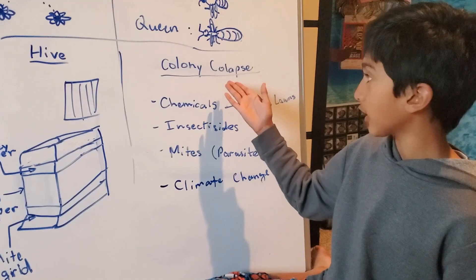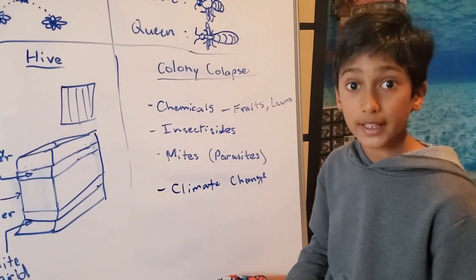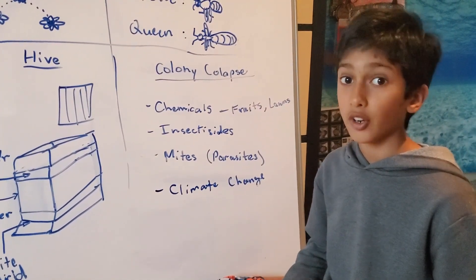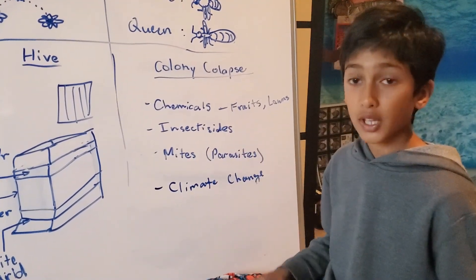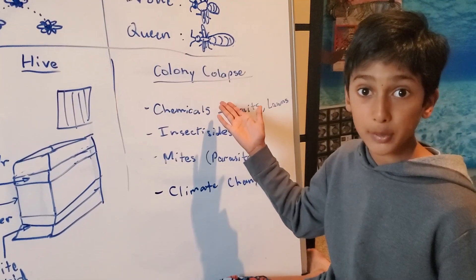This is called a colony collapse. Seventy to eighty percent of colonies are gone because of all of this. Also, climate change is causing colony collapses.